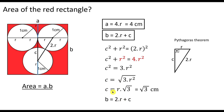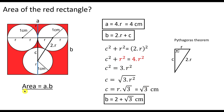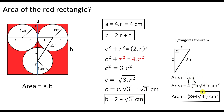Now we substitute C and R into the expression for B to obtain that B is equal to two plus square root of three centimeters. Now substituting A and B into the area: Area = A times B = 4 times (2 plus square root of 3), which gives us the area equal to eight plus four square root of three centimeters squared. This is the answer.